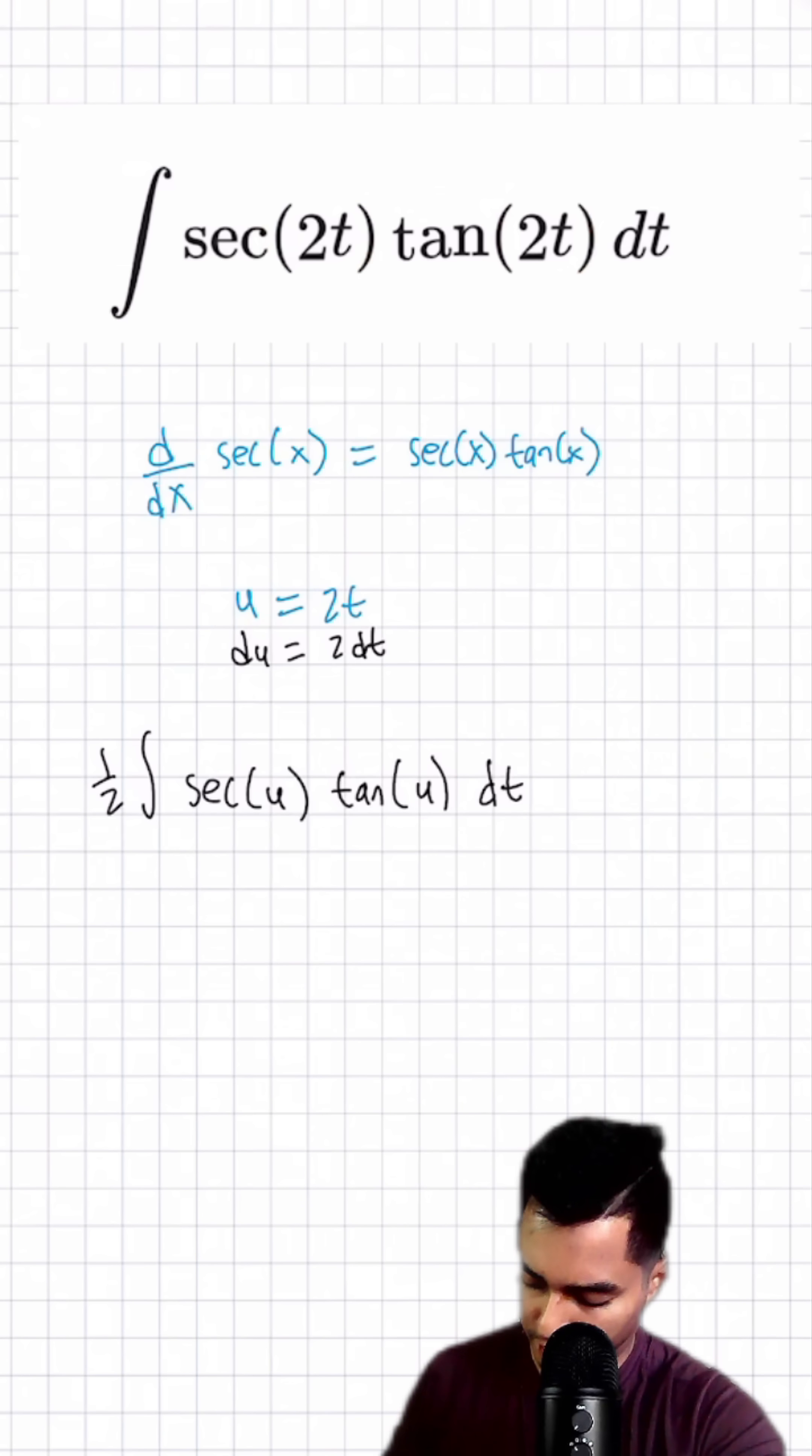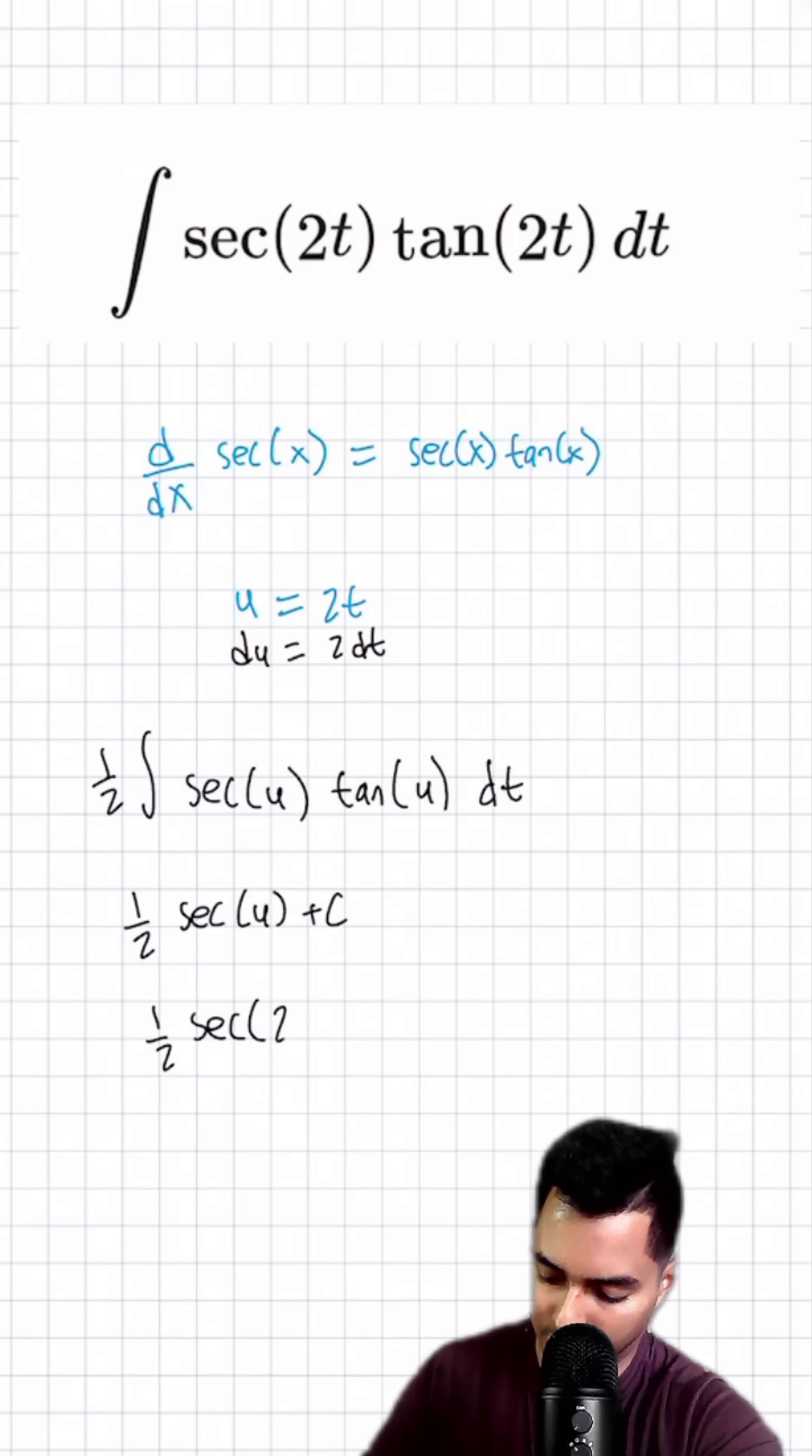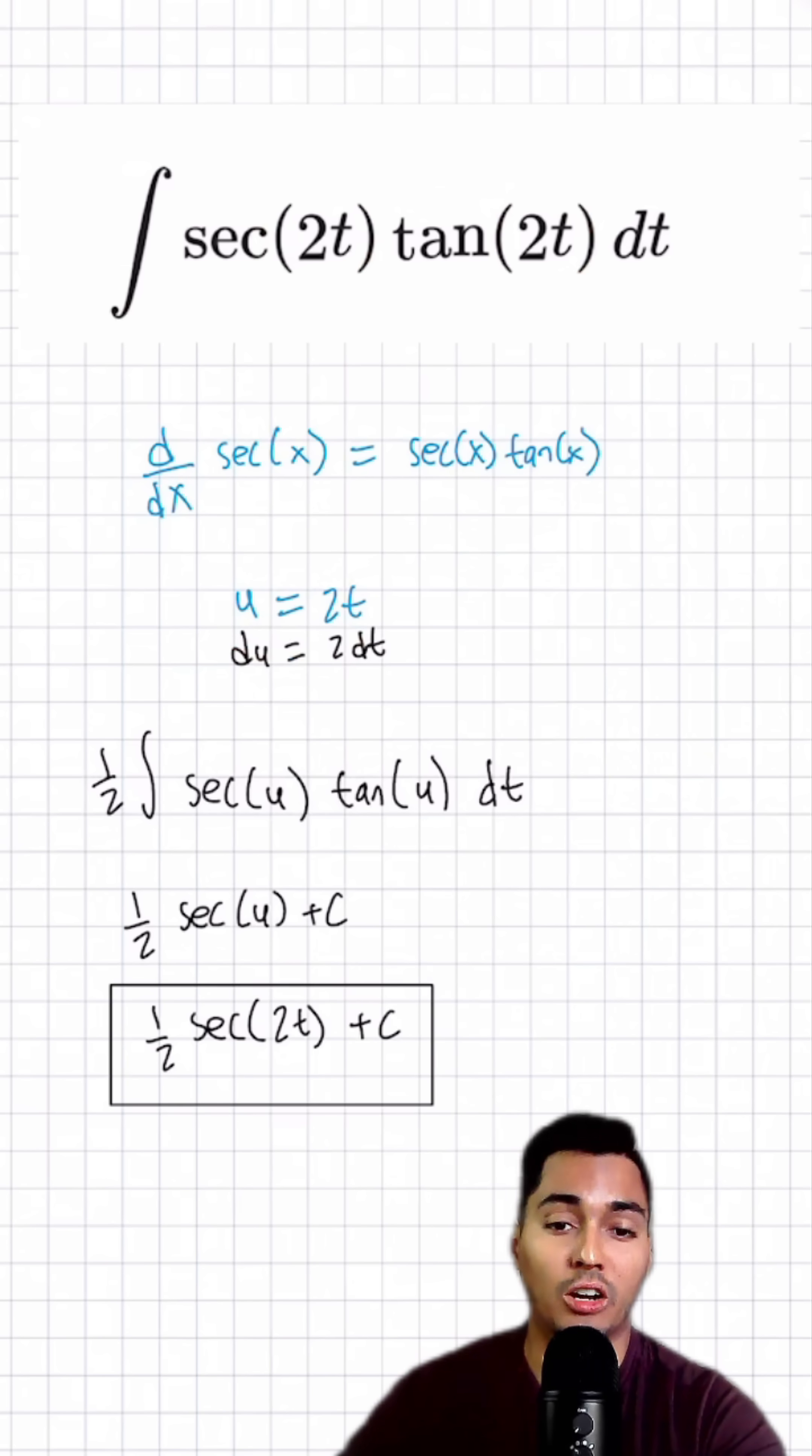According to our definition for this derivative, this integral evaluates to one half secant of u plus c. Recall that our u was 2t, so we're going to have one half secant of 2t plus c. Our final answer is one half secant of 2t plus c.